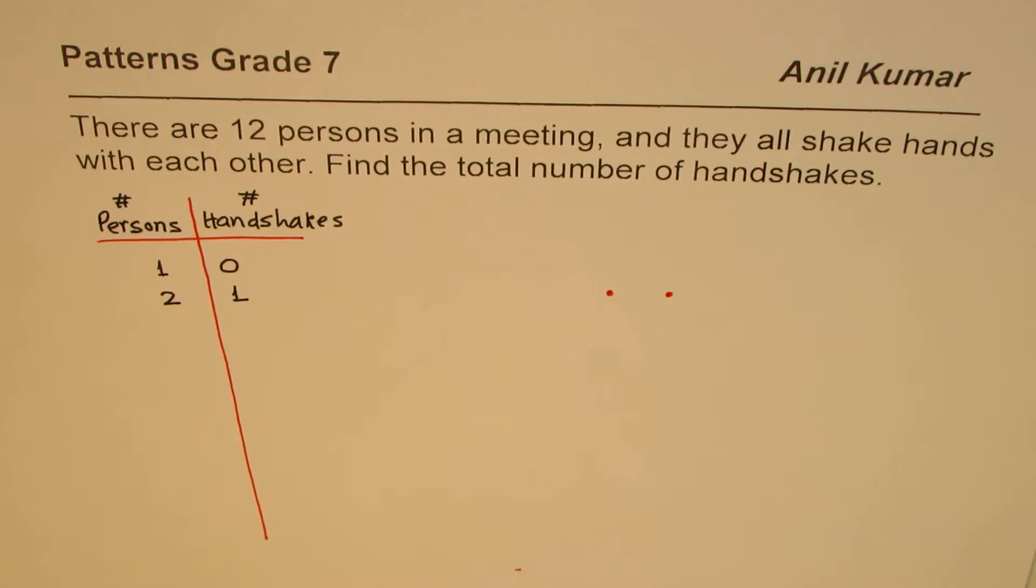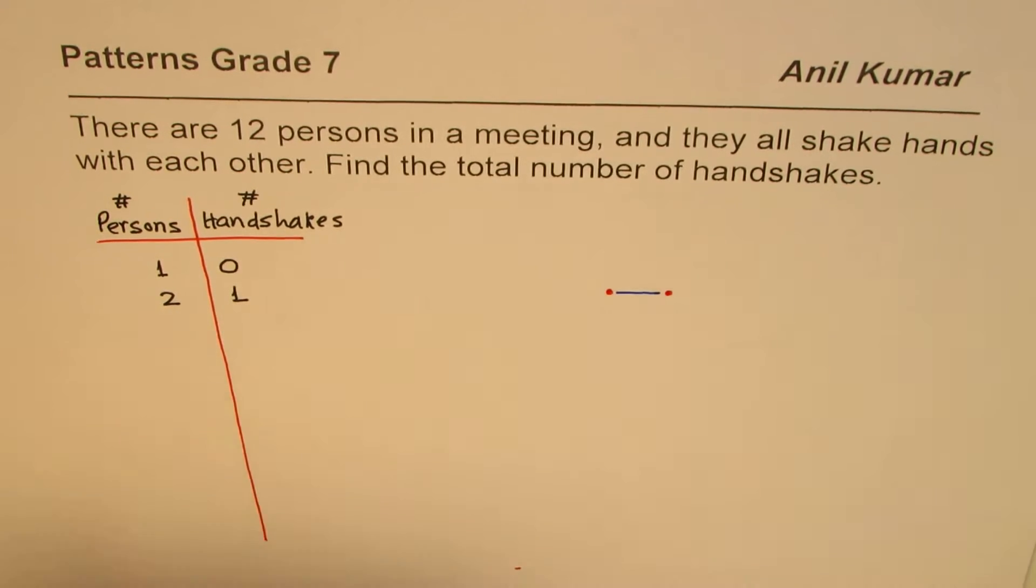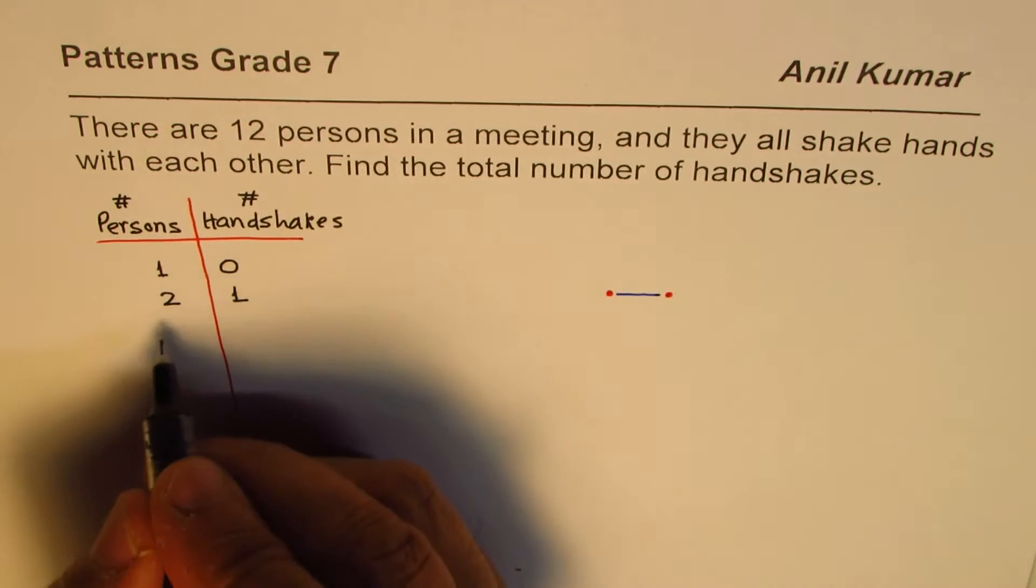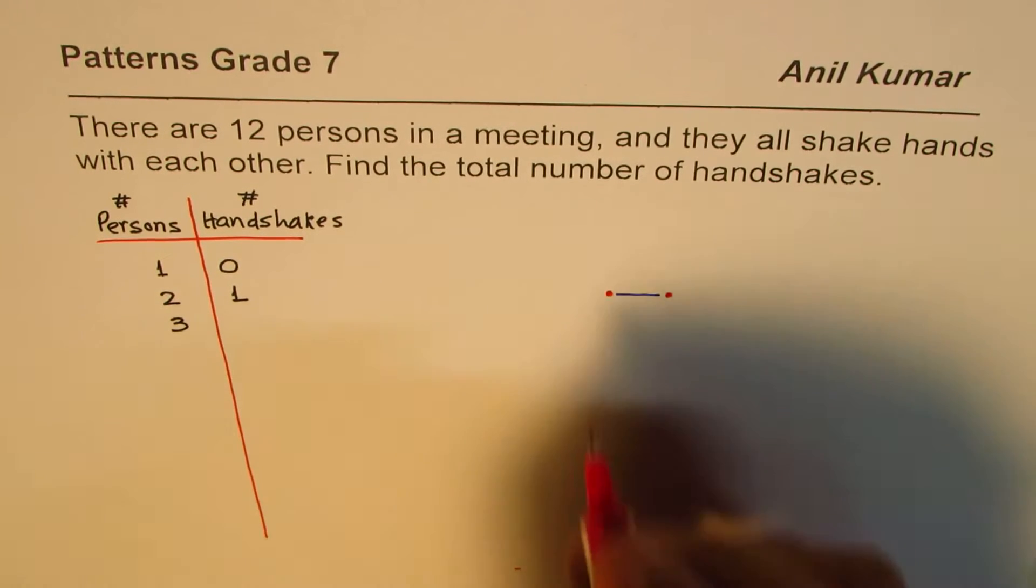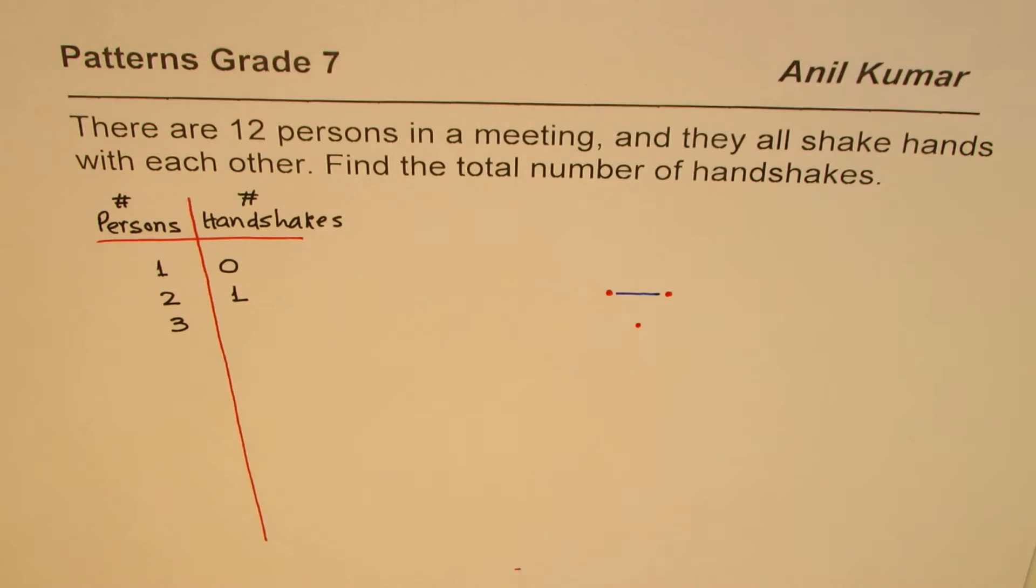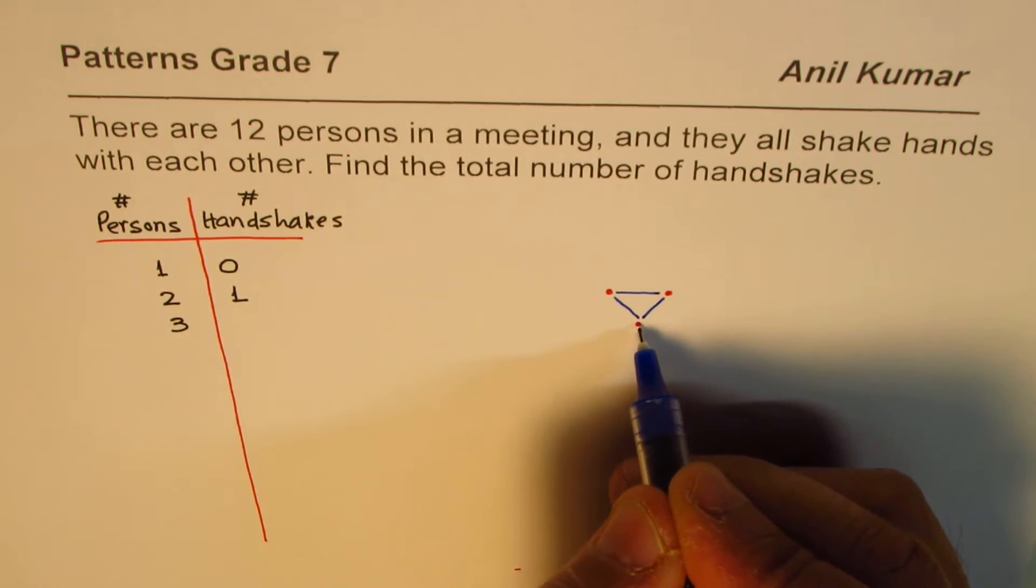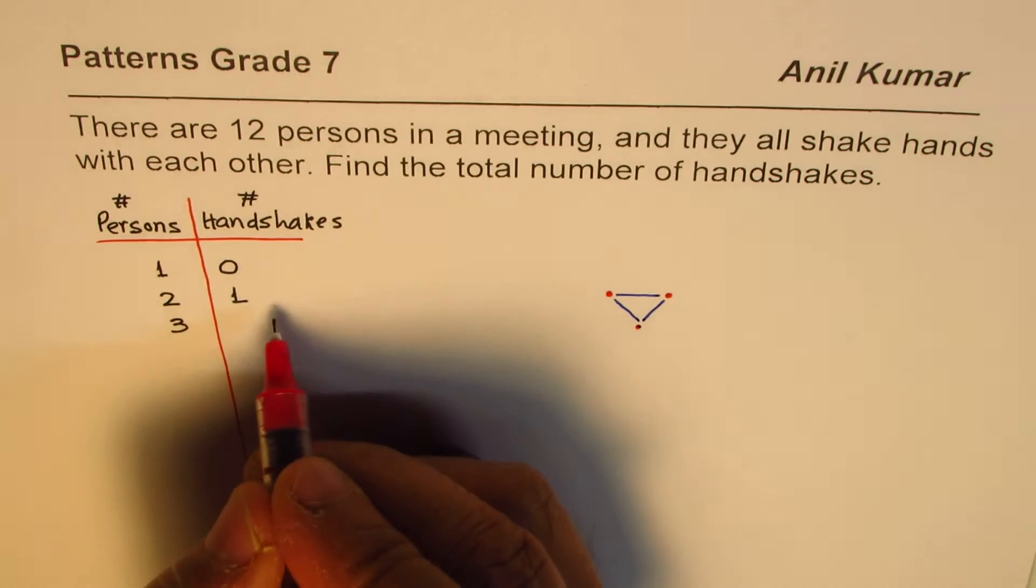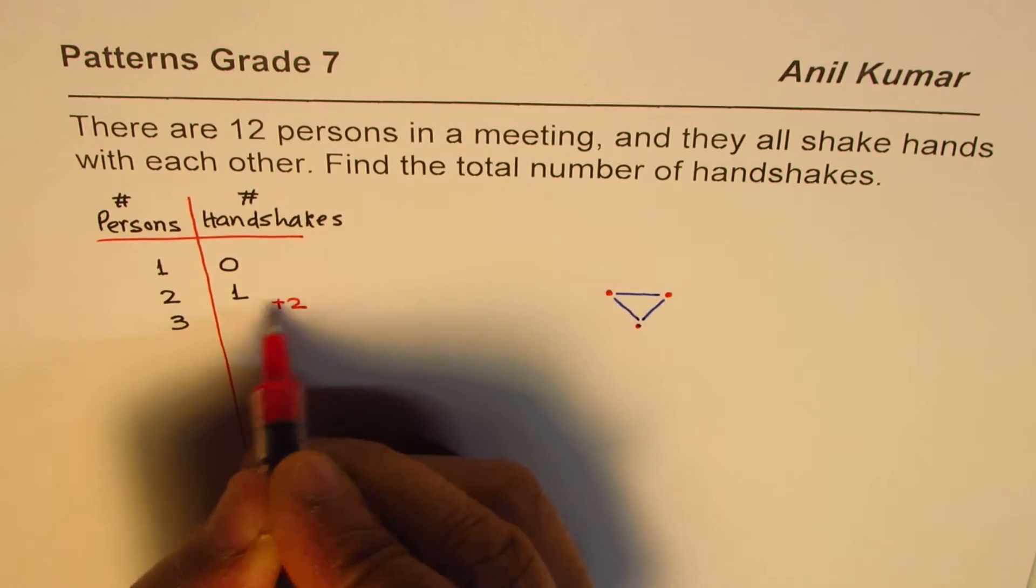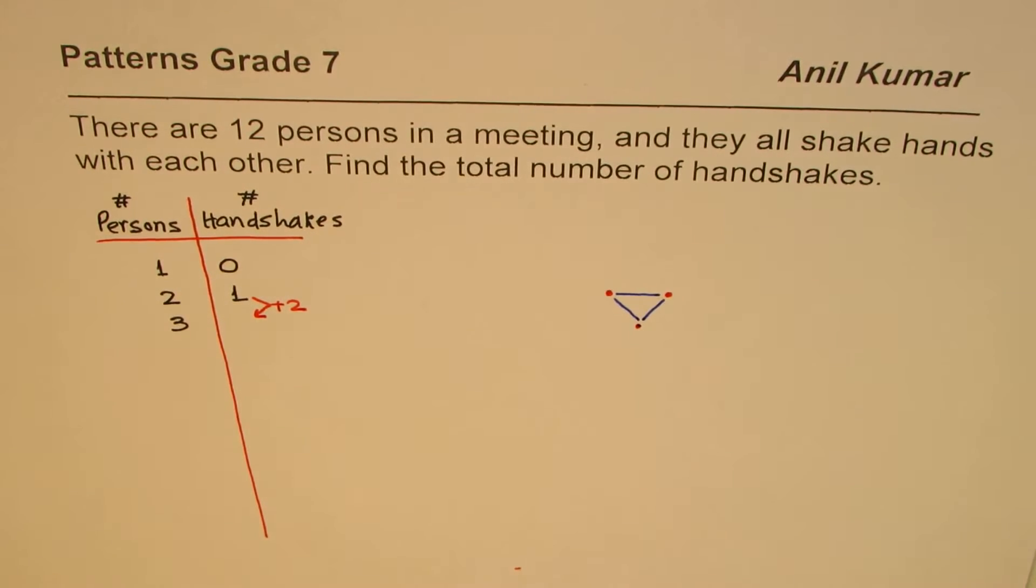Now let's say there are two persons. One person, no handshake, but if there are two persons, then there is one handshake between them. Now let us say the third person joins in. If the third person joins in, let's say this is the third person who joins in, then there will be two more handshakes. Do you see that? So this third person shakes hands with both who were present, so we have plus 2 handshakes. One plus two gives us three.